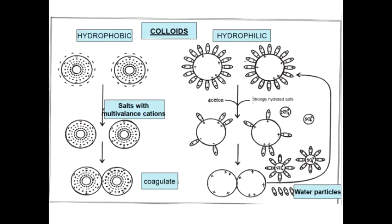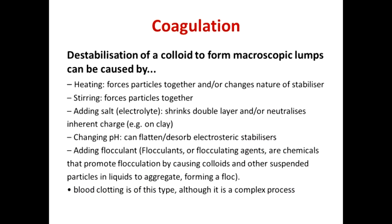Coagulation can happen when an electrolyte solution is added to a hydrophobic colloidal solution. This scheme illustrates coagulation of both hydrophobic and hydrophilic solutions and their main reasons. In both cases, addition of salt provokes coagulation: for hydrophobic solutions, salts decrease the charge so uncharged particles aggregate; for hydrophilic solutions, salt particles remove the water coat.